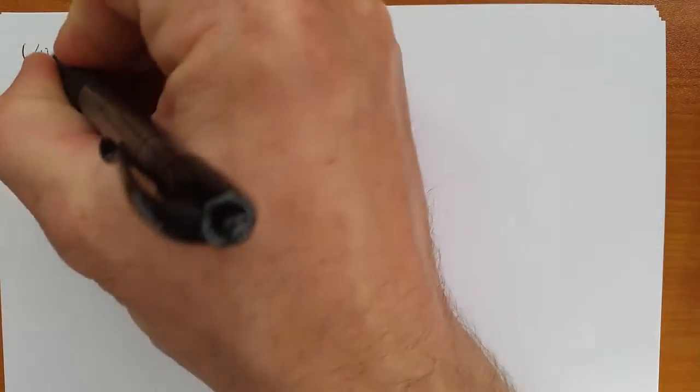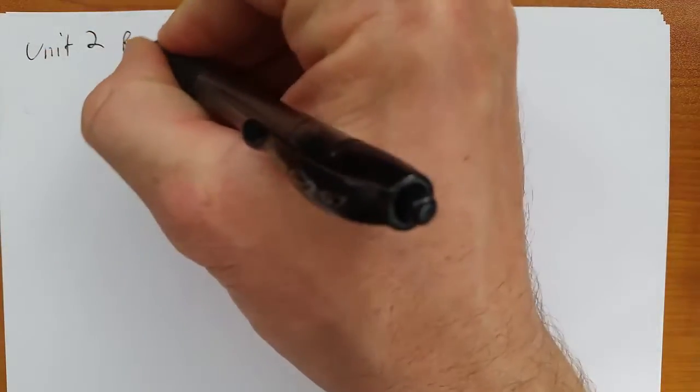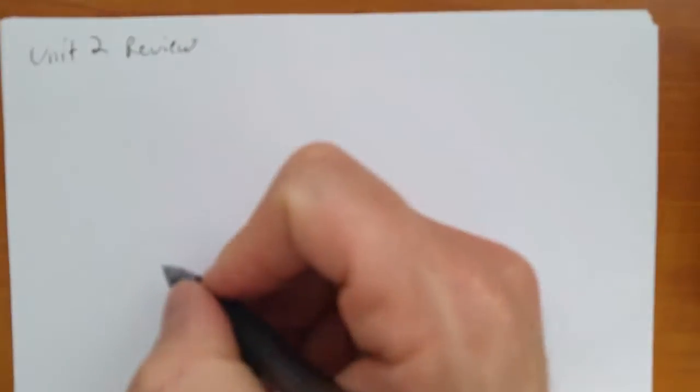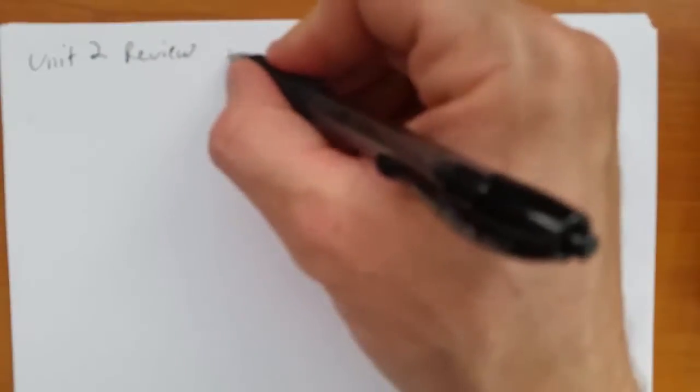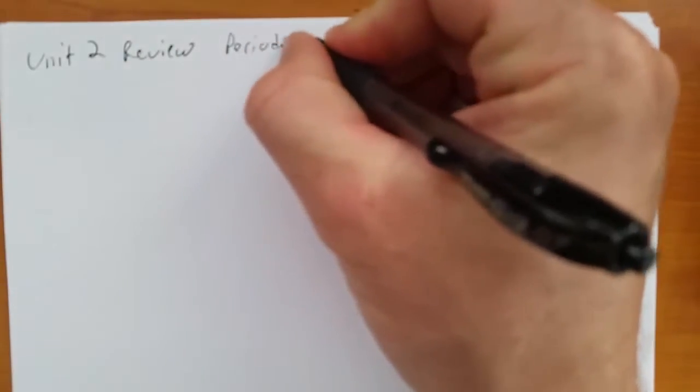A review for unit two. So unit two, review. Alright, so first thing, what we're talking about is the periodic table.